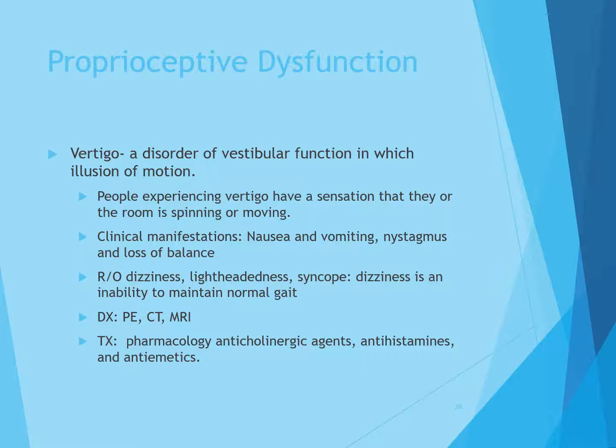Vertigo is a disorder of vestibular function in which there is an illusion of motion — people who experience vertigo have a sensation that they or the room is spinning or moving. Clinical manifestations include nausea, vomiting, nystagmus, or loss of balance. We need to rule out dizziness such as lightheadedness or syncope — dizziness is an inability to maintain a normal gait and is not the same as vertigo. Diagnosis is through physical exam, CT, or MRI. Treatment is pharmacologic: anticholinergic agents, antihistamines, and antiemetics. Vestibular nystagmus is the constant involuntary movement of the eyeball.